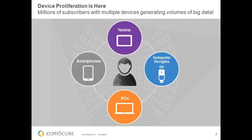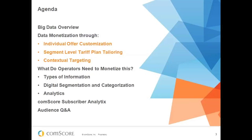We're probably all aware that device proliferation is here. We have millions of subscribers connected to carriers, many of whom have multiple devices generating huge volumes of data. It's not just about smartphones — these subscribers have tablets, hotspots, dongles, and data cards through which they connect PCs and other devices, plus PCs directly connected to the mobile network. All of these devices are generating huge volumes of data.